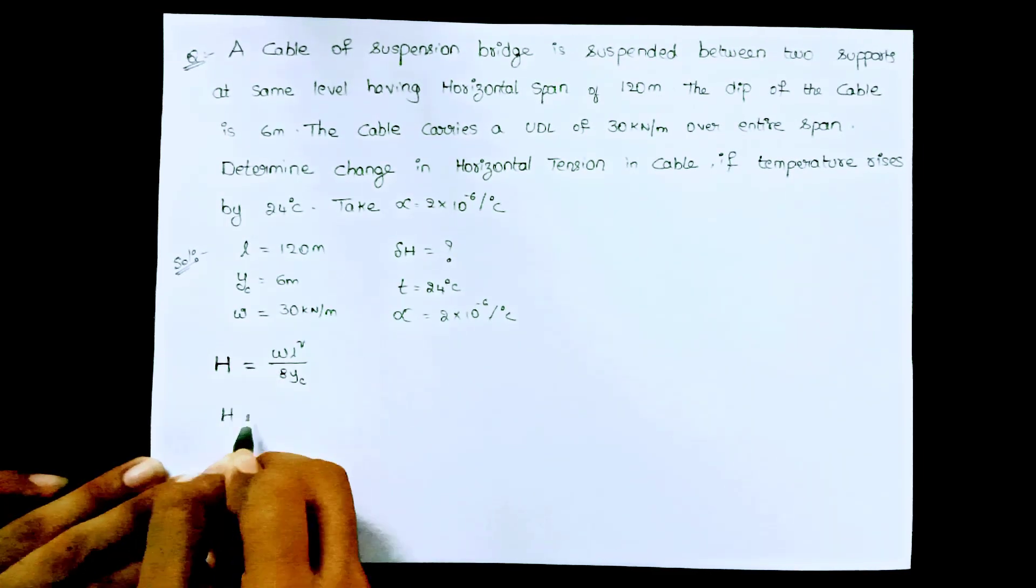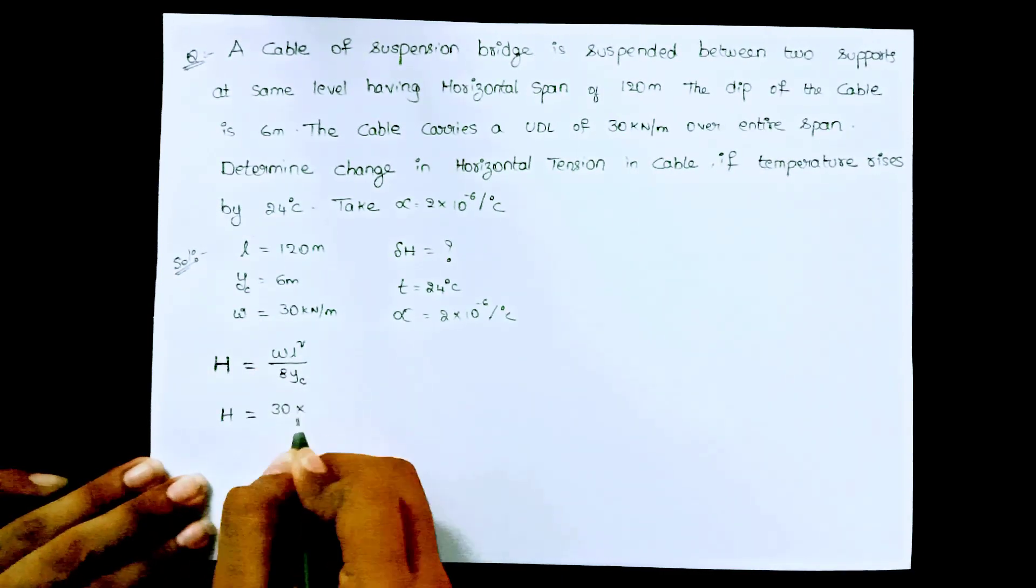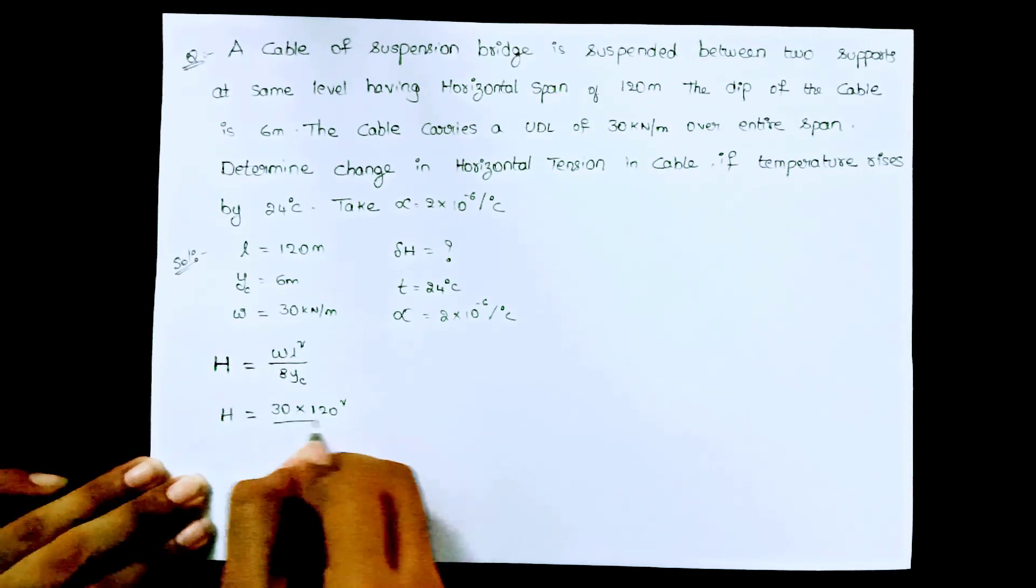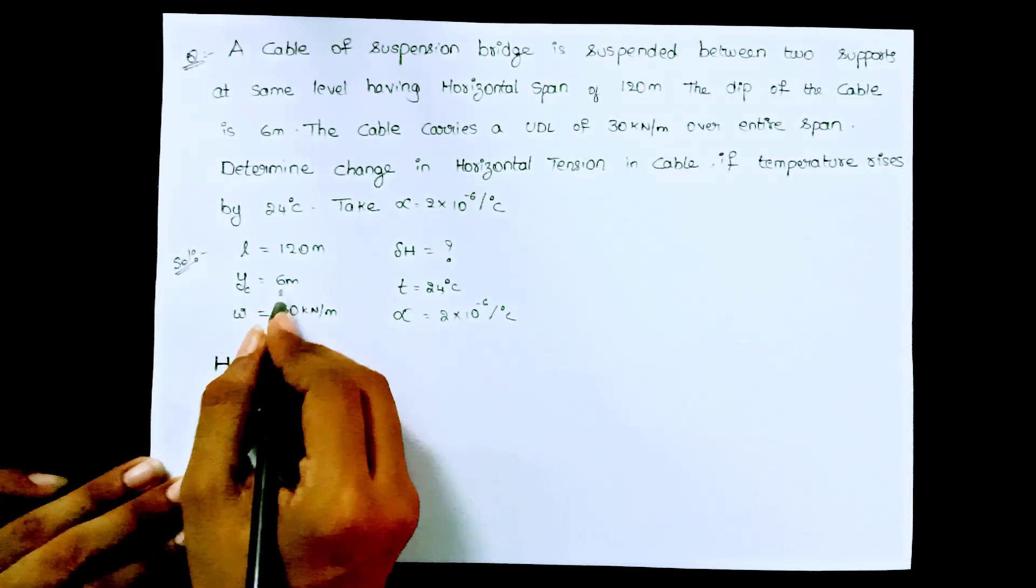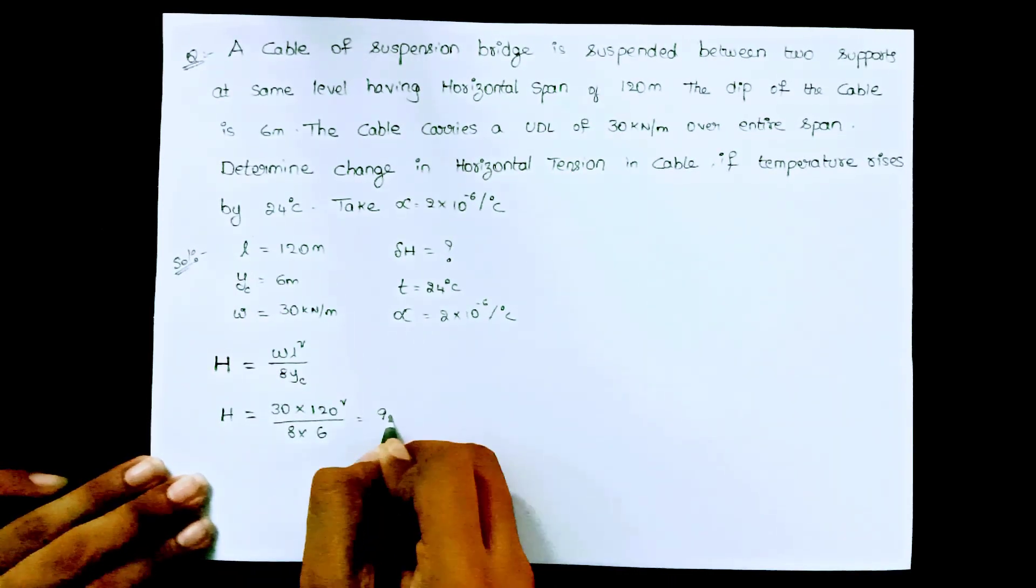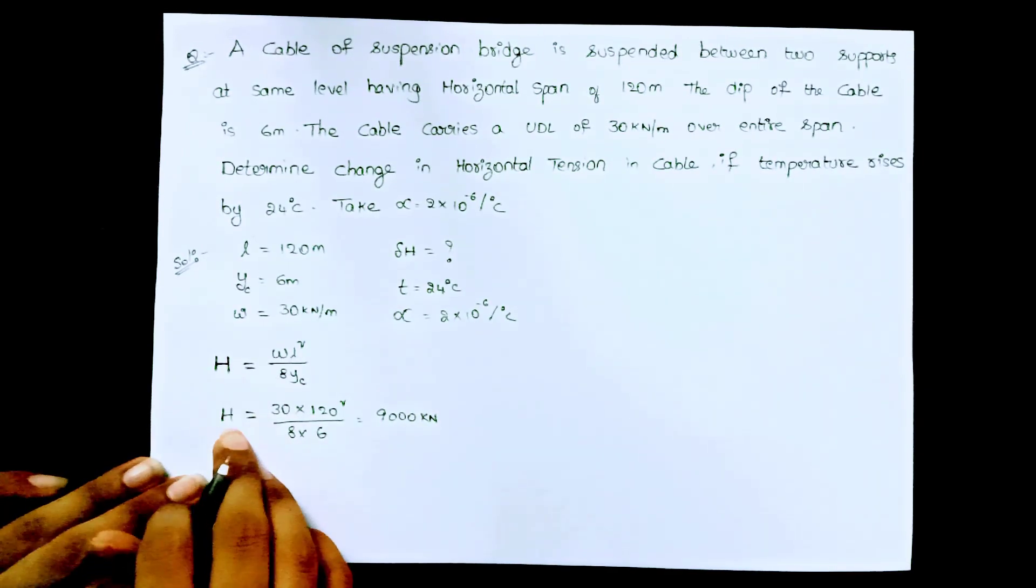Now horizontal reaction h equal to w is 30 kilonewton per meter and l square that means 120 square divided by 8 into yc means dip of the cable 6 meters. So on calculating you will get 9000 kilonewton. We have obtained the value of h.